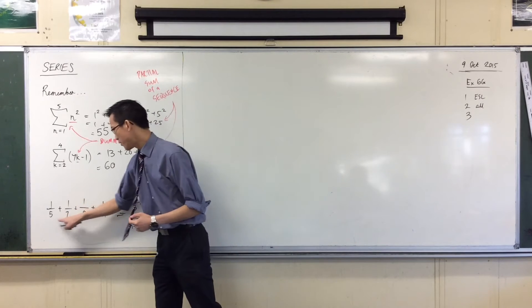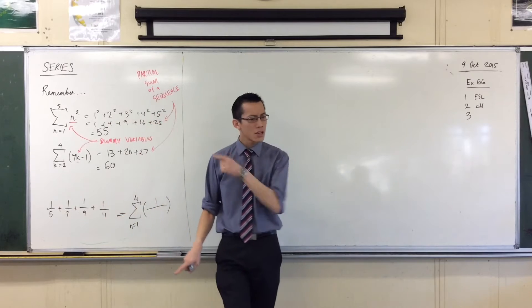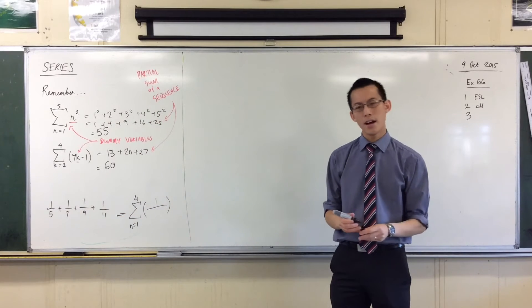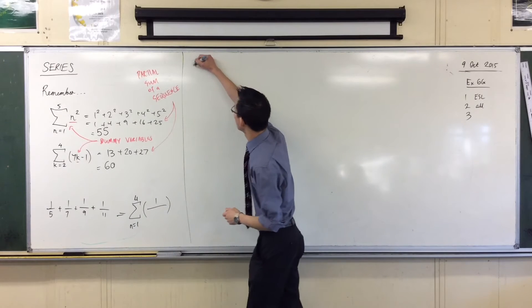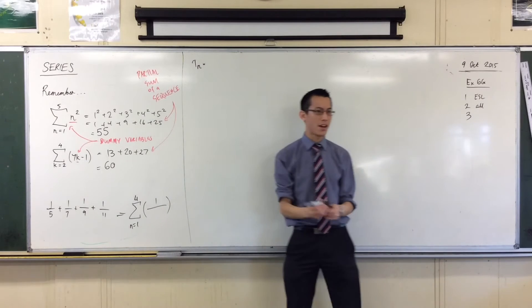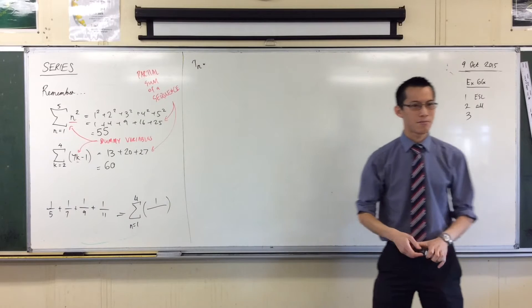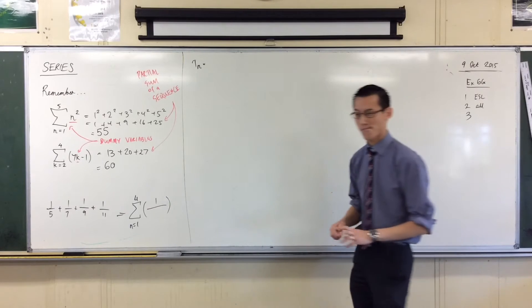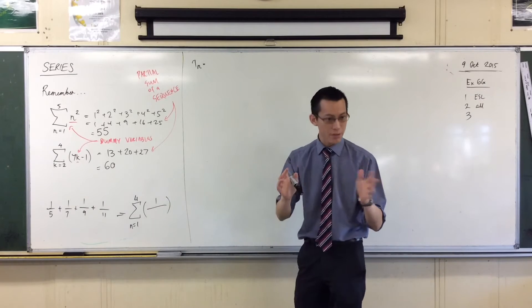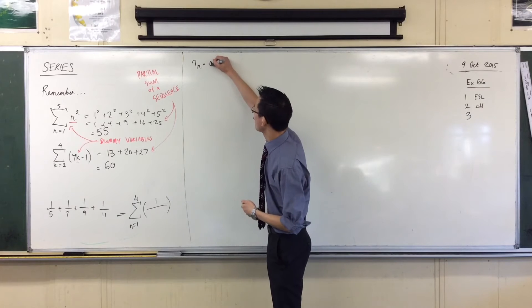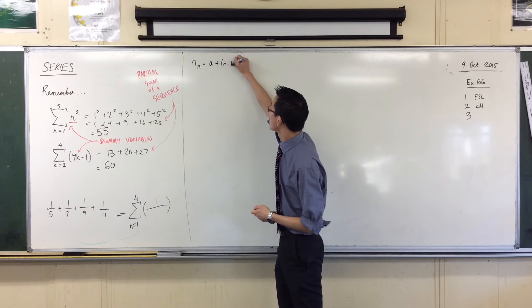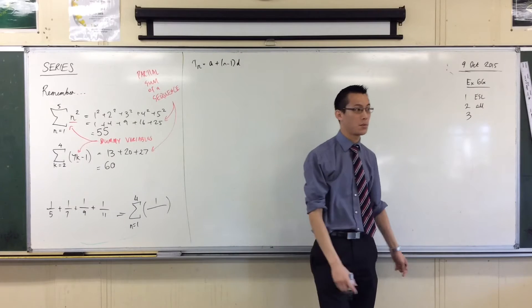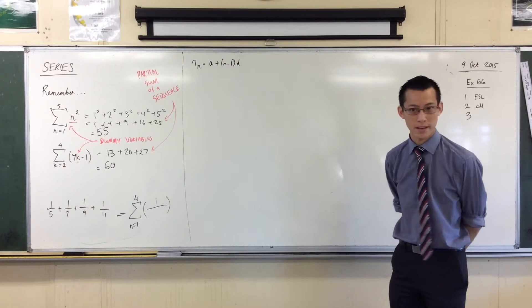Now, remembering that each of these terms here forms an AP, just turn back, if you've still got it there, to where we drew our table up, and we said, what's the formula for every term in an AP? What's the formula? Generally speaking, right, you started with your first term, and then you added n minus 1, lots of whatever that common difference was. Okay?